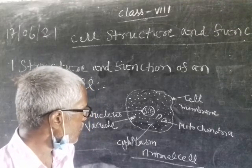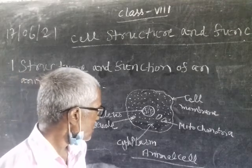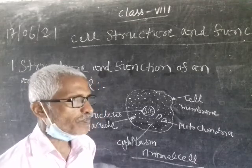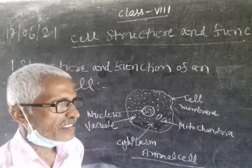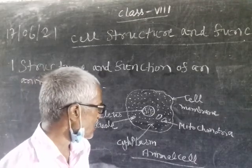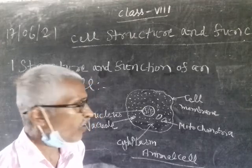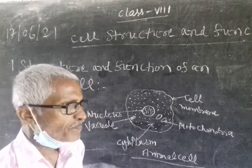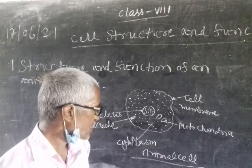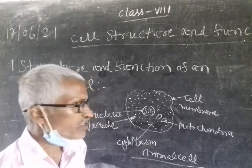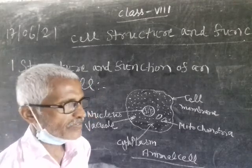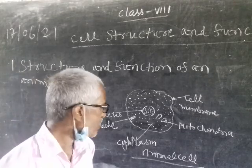Now the third part is cytoplasm. Cytoplasm is a transparent dairy-like structure in which all chemical reactions take place. During the chemical reactions, new substances are formed.